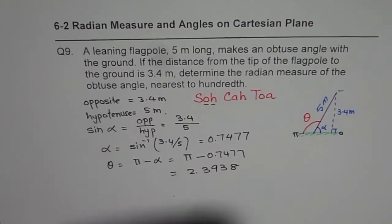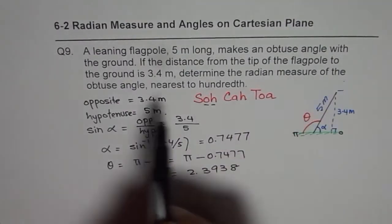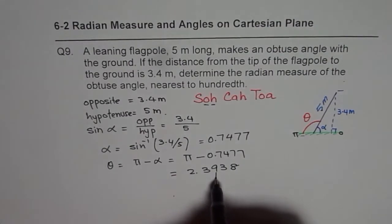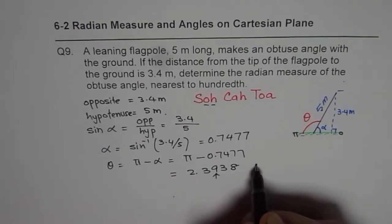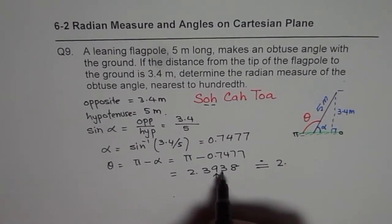Now the question is determine the radian measure of the obtuse angle nearest to hundredth place. So we have to round it to the hundredth place. So let's round it to hundredth place. We get 2.39 radians.